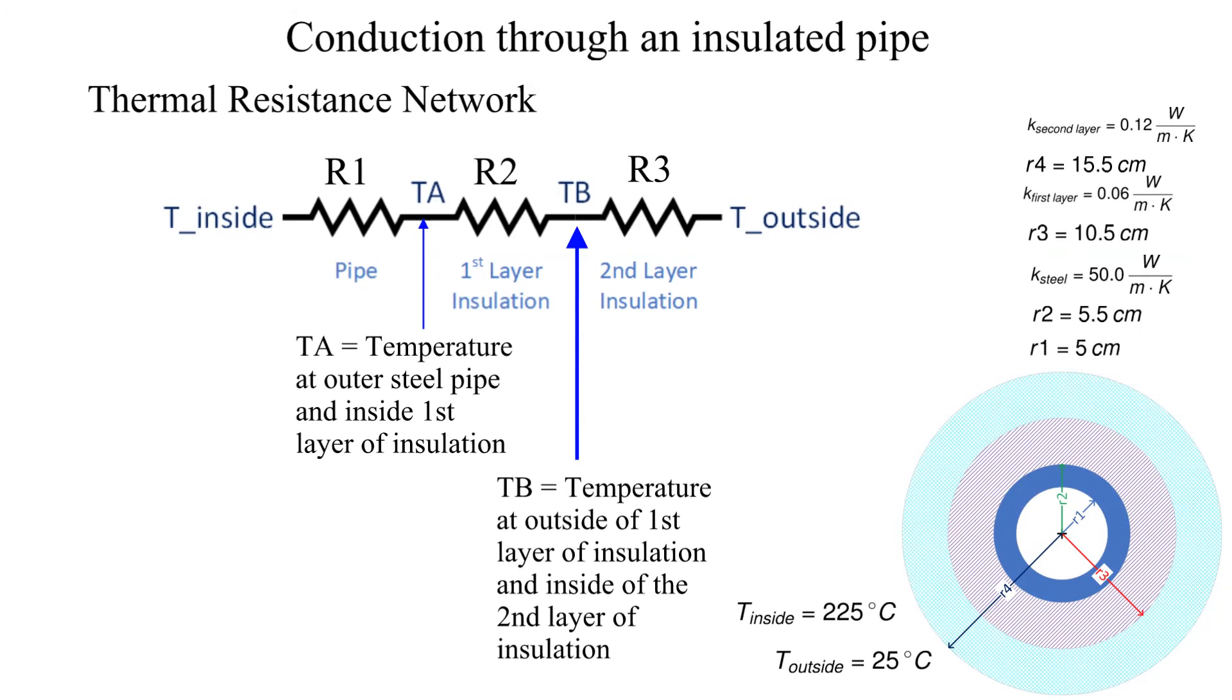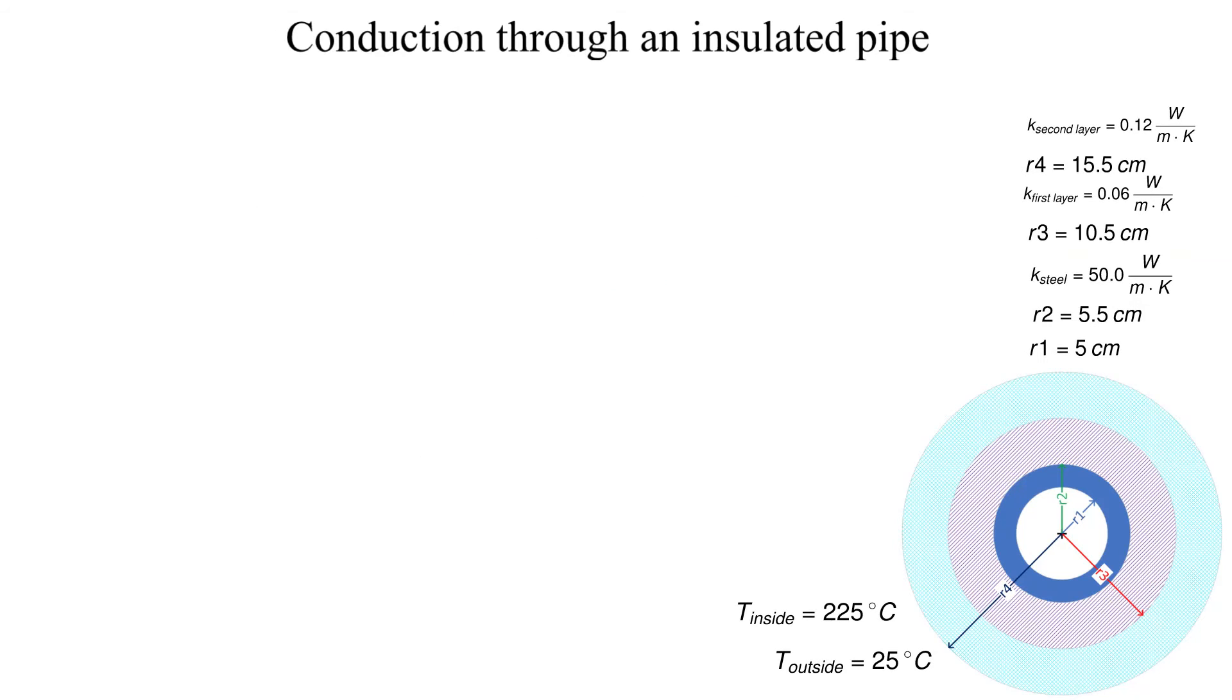Now let's calculate the resistance for the steel pipe, denoted as R1. The calculation and results are shown here.